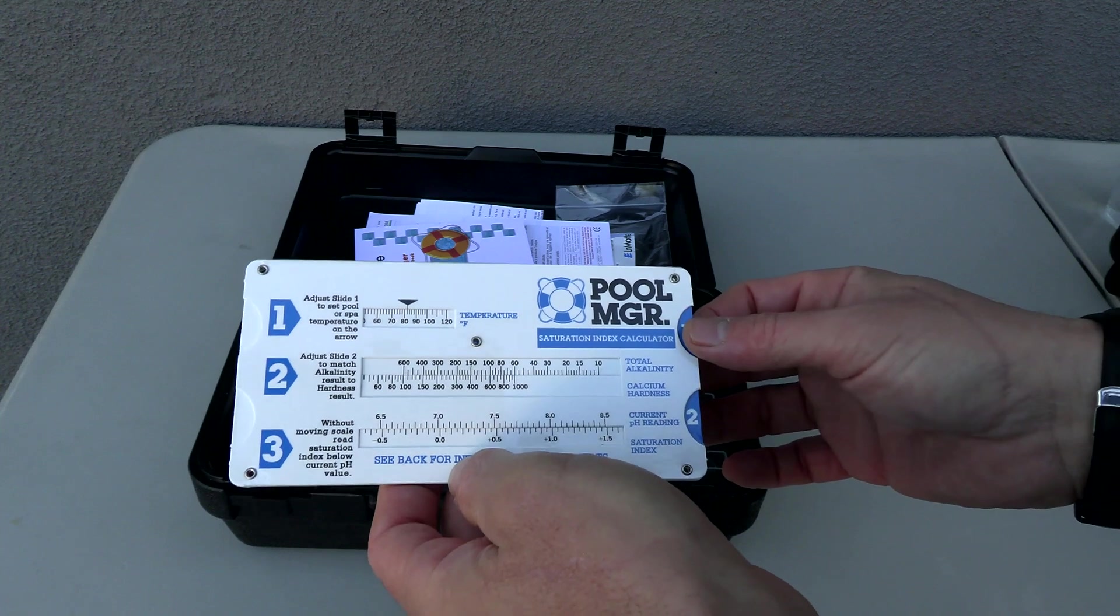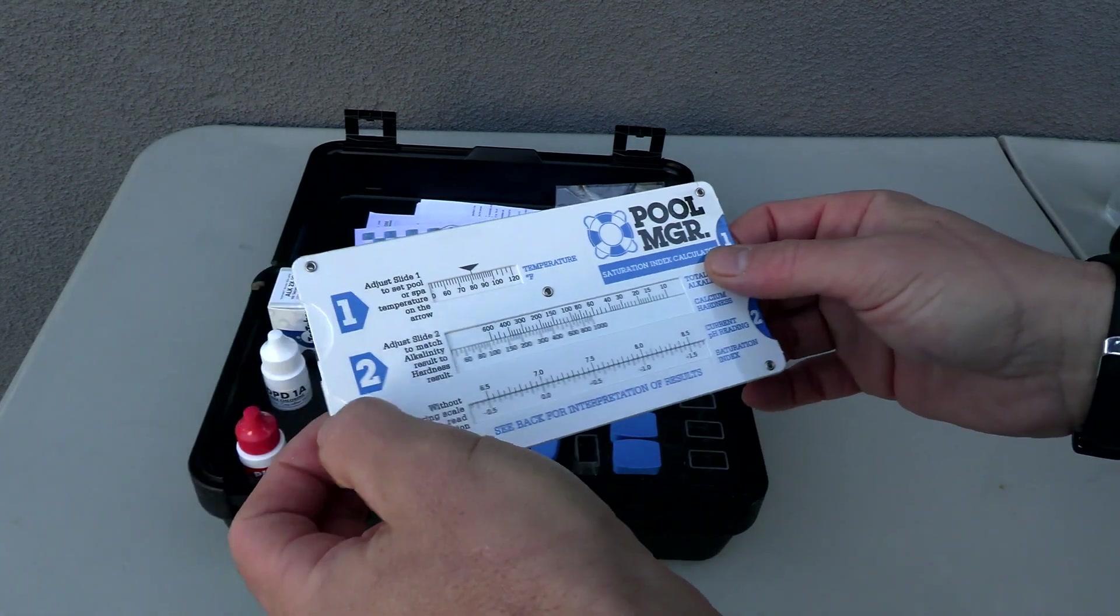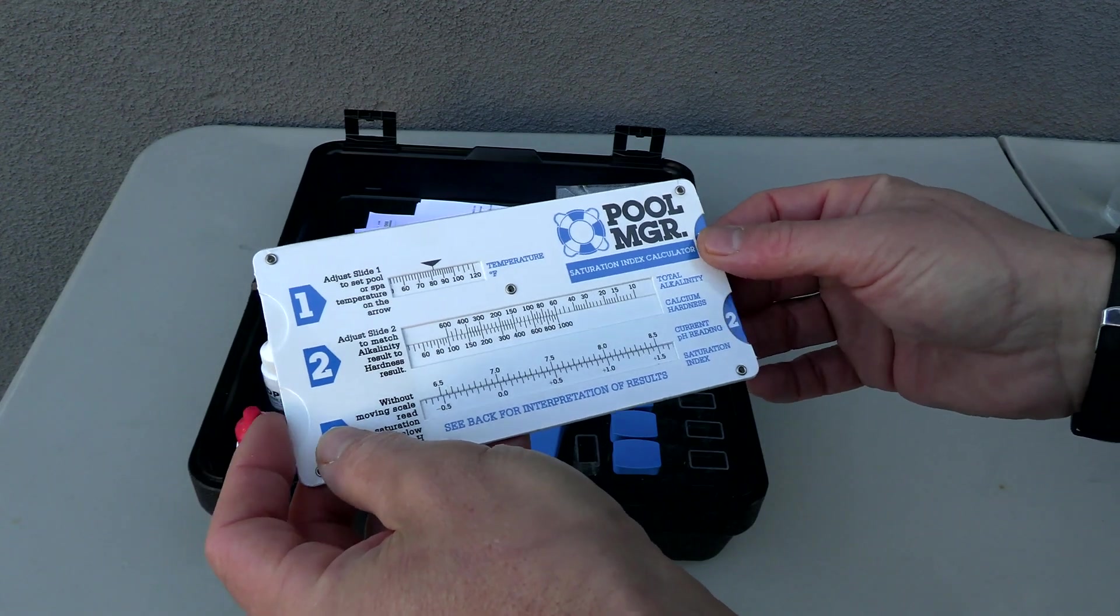Included is this really nice pool manager water quality handbook that you can flip through. I think one of the coolest things included here is this old school saturation index calculator. You slide these tabs here depending on your readings to get the pool's LSI.